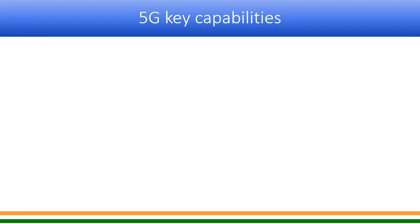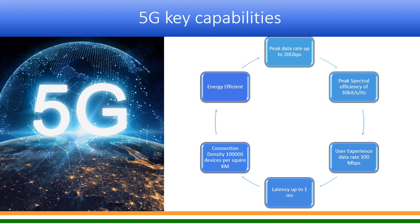Let us look at key capabilities of 5G. 5G supports a peak data rate up to 20 Gbps. Spectral efficiency is 3 times better — up to 30 bits/s/Hz in the downlink direction. User experience data rate is 10 times better than 4G at 100 Mbps. Latency is up to 1 millisecond — 10 times better than 4G. Connection density is 1 million (10 lakh) devices per square kilometer, and it is 100 times more energy efficient than 4G.